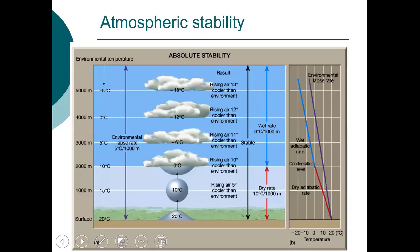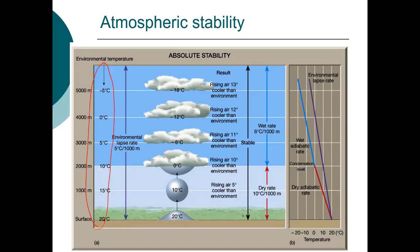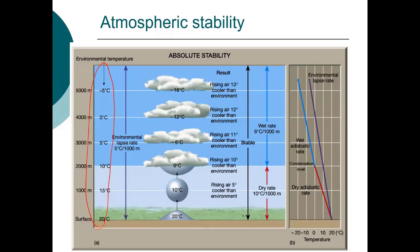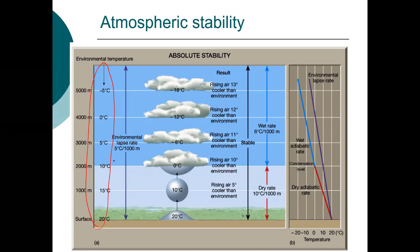We'll look at the situation where we have an environmental temperature — so this is what we would actually measure, the sounding information that I graphed is actual data. At the surface it's 20 degrees; at 1,000 meters it's 15; at 2,000 it's 10; at 3,000 it's 5. This is the environmental lapse rate.